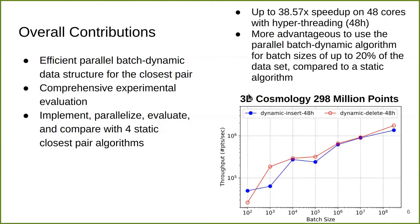Here's our overall contribution. We design an efficient parallel batch dynamic data structure for closest pair. We implement the data structure and perform a comprehensive experimental study. We also implement, parallelize, evaluate, and compare with four static closest pair algorithms. We test our algorithms on 48 cores with hyperthreading and achieve up to 38 times self-relative speedup. When comparing with static algorithms, it is more advantageous to use the parallel batch dynamic algorithm for batch sizes of up to 20% of the dataset.